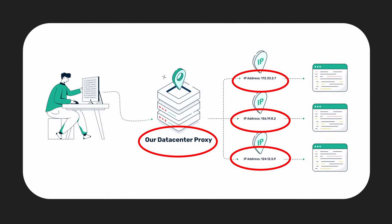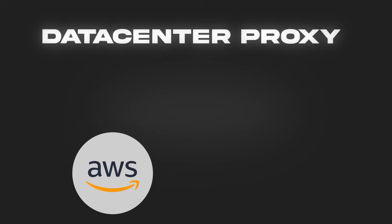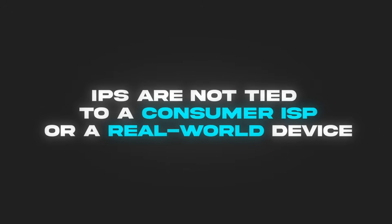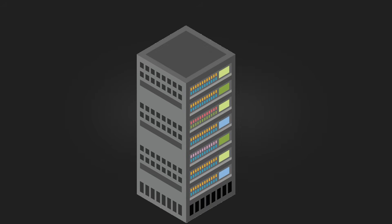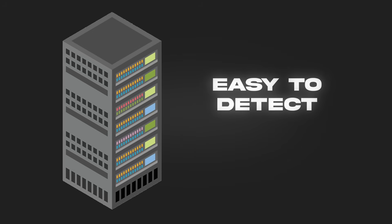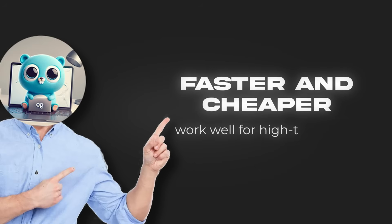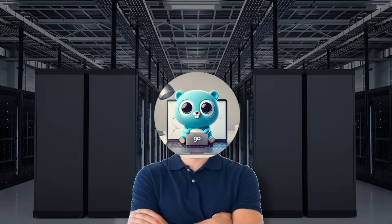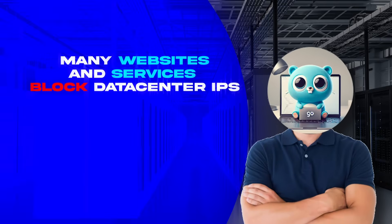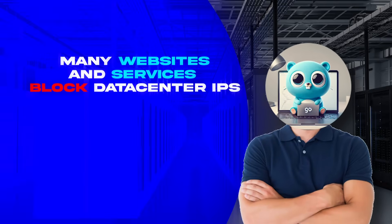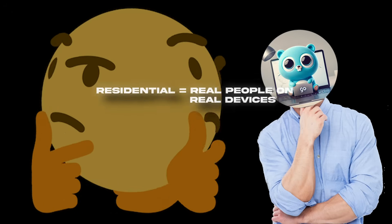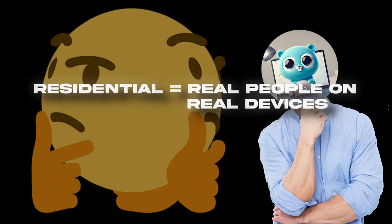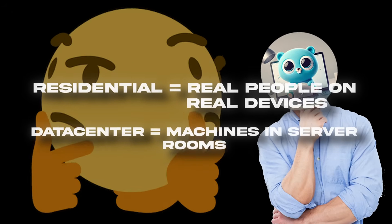A data center proxy, on the other hand, is hosted on cloud infrastructure like AWS or DigitalOcean. These IPs are not tied to a consumer ISP or real-world devices — they come from server farms and are easy to detect via IP reputation databases. They're significantly faster and cheaper and work well for high-throughput tasks that don't require stealth. However, many websites and services block data center IPs by default due to their association with bots and scrapers. Think of it like this: residential equals real people on real devices, and data center equals machines in server rooms.